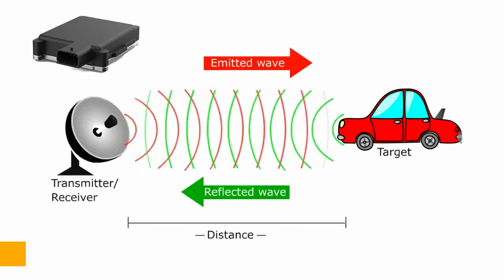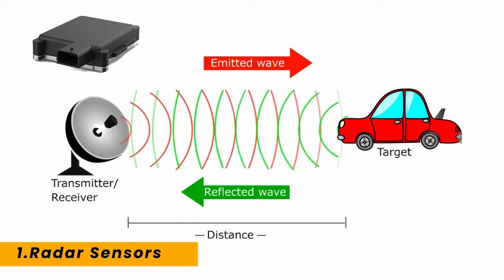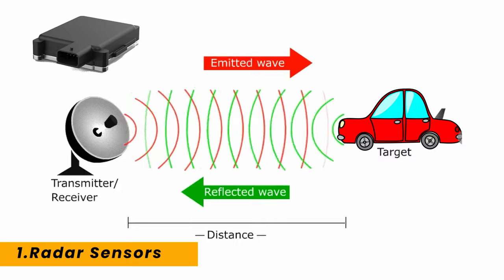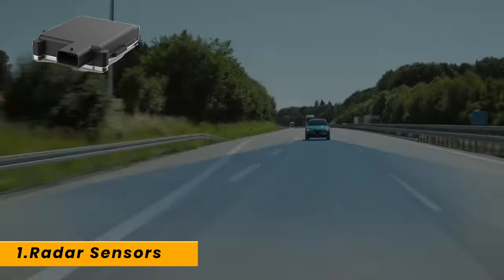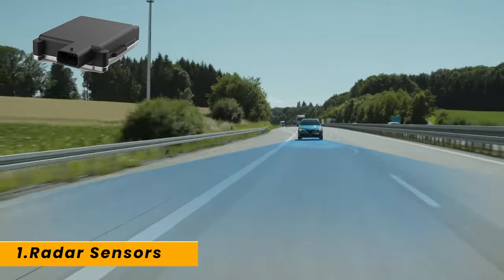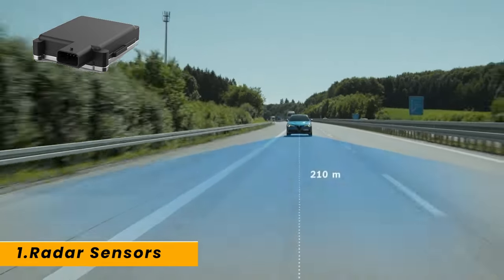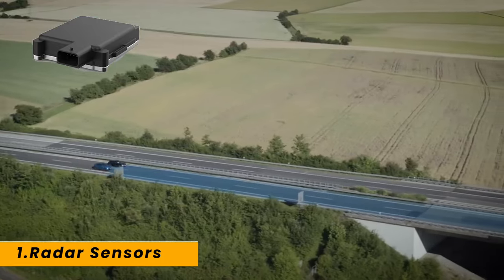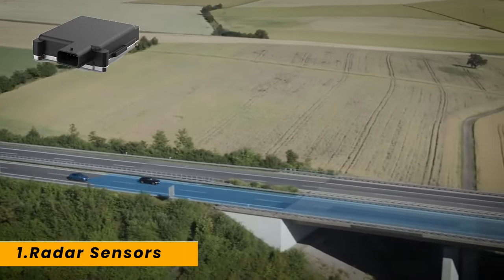Radar sensors use radio waves to detect objects and measure their distance and speed. They are excellent for detecting other vehicles and objects in the vehicle's path.